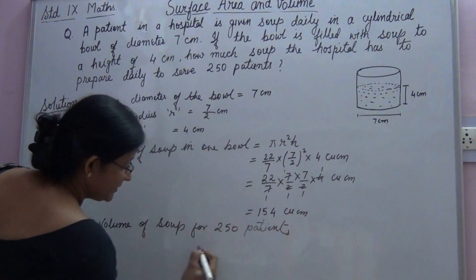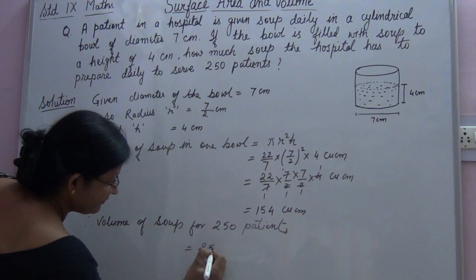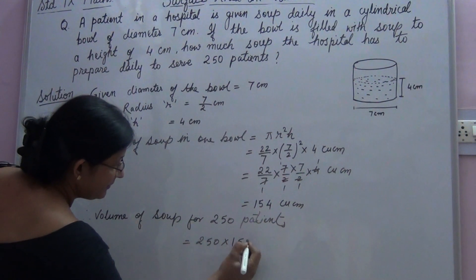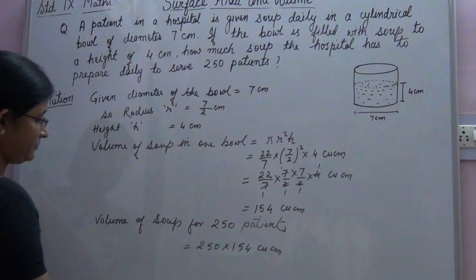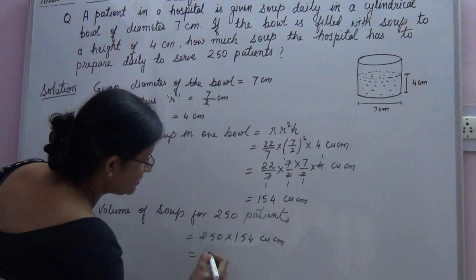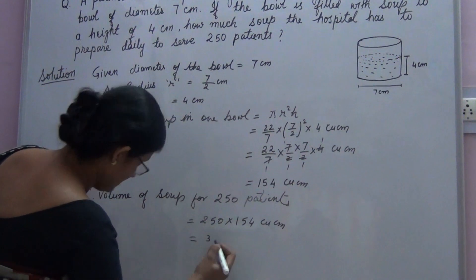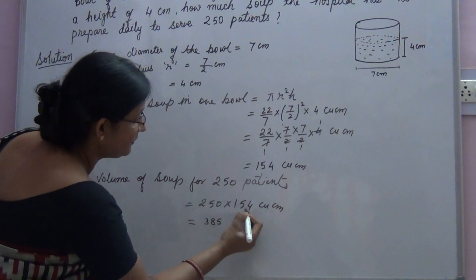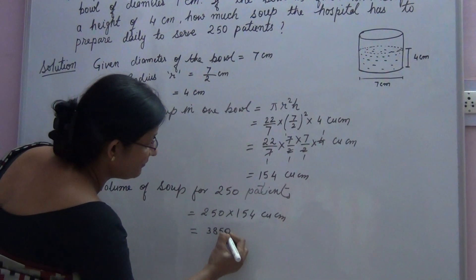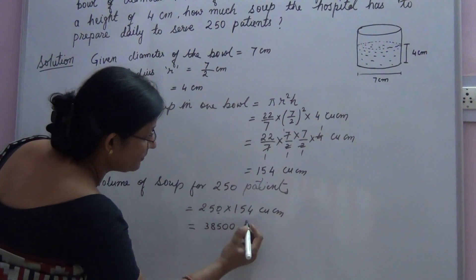Volume of soup for 250 patients is equal to 250 multiplied by 154 cubic cm. If we multiply 154 by 25, we get 3850, and one more 0 from here gives us 38,500 cubic cm.